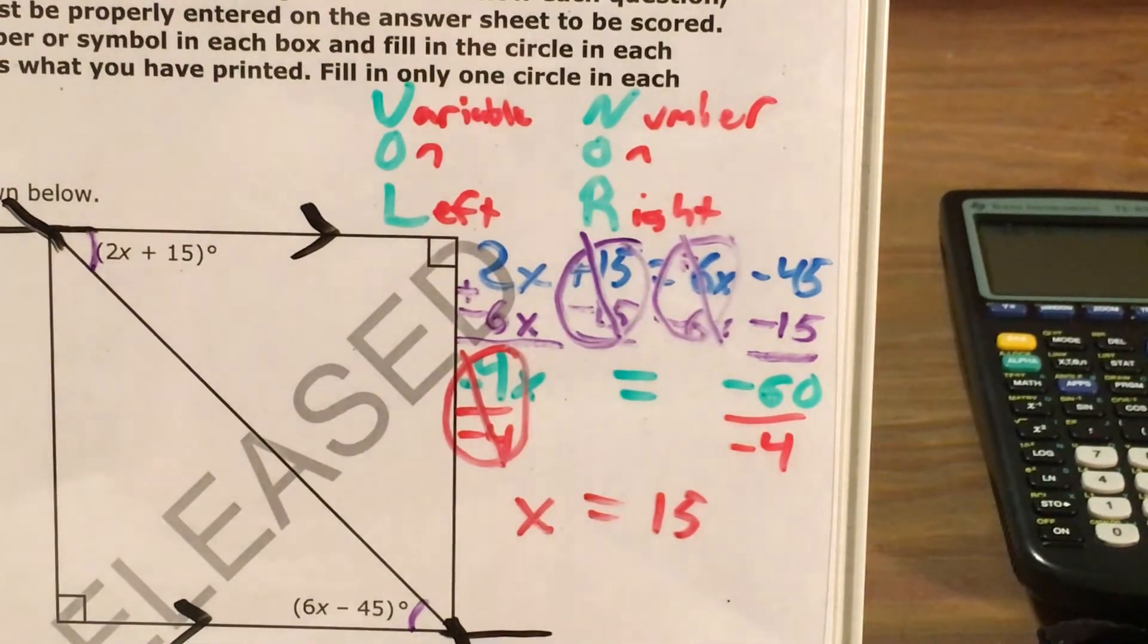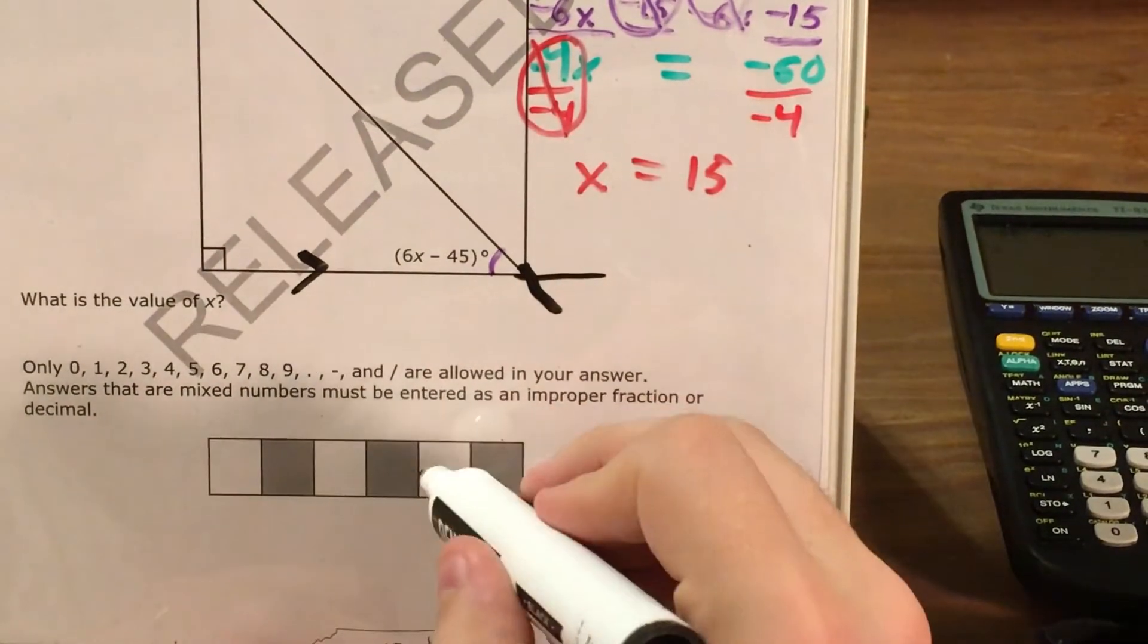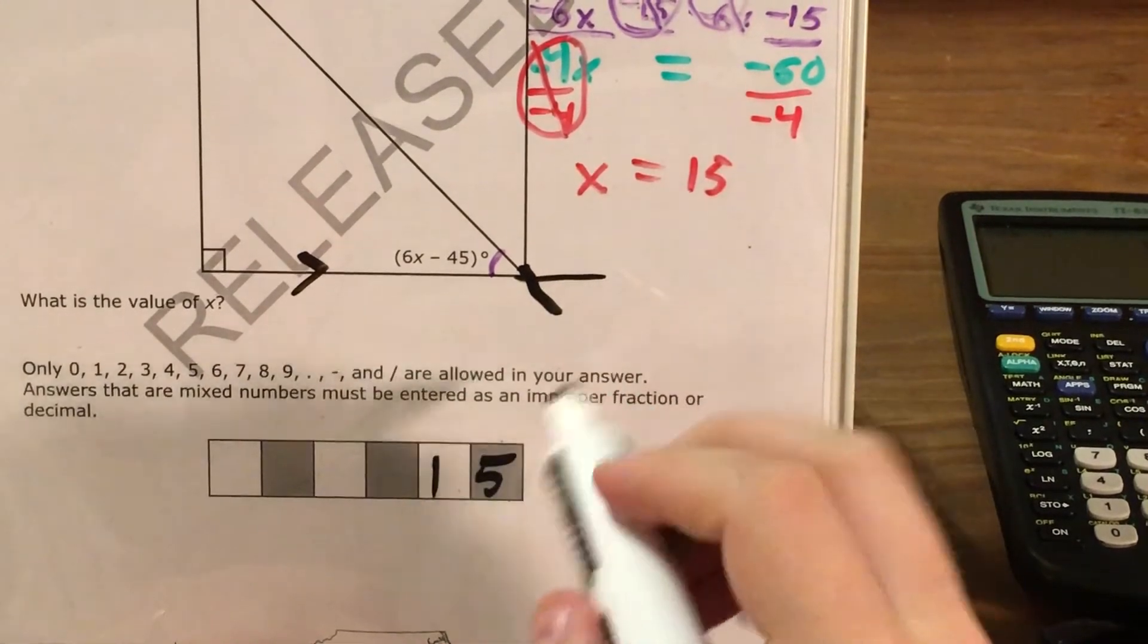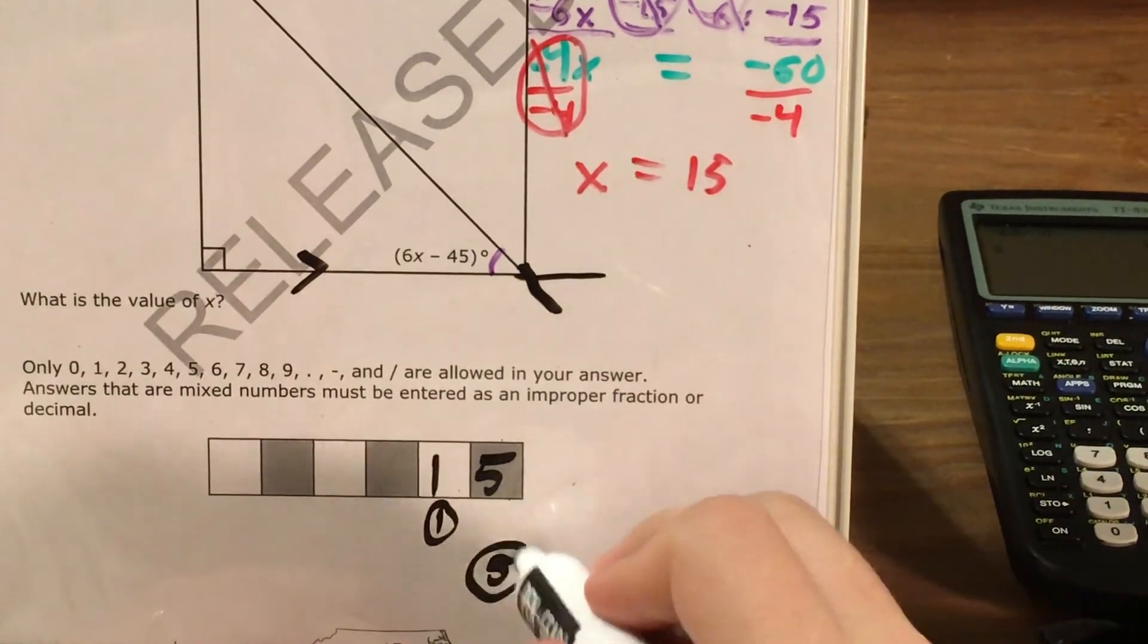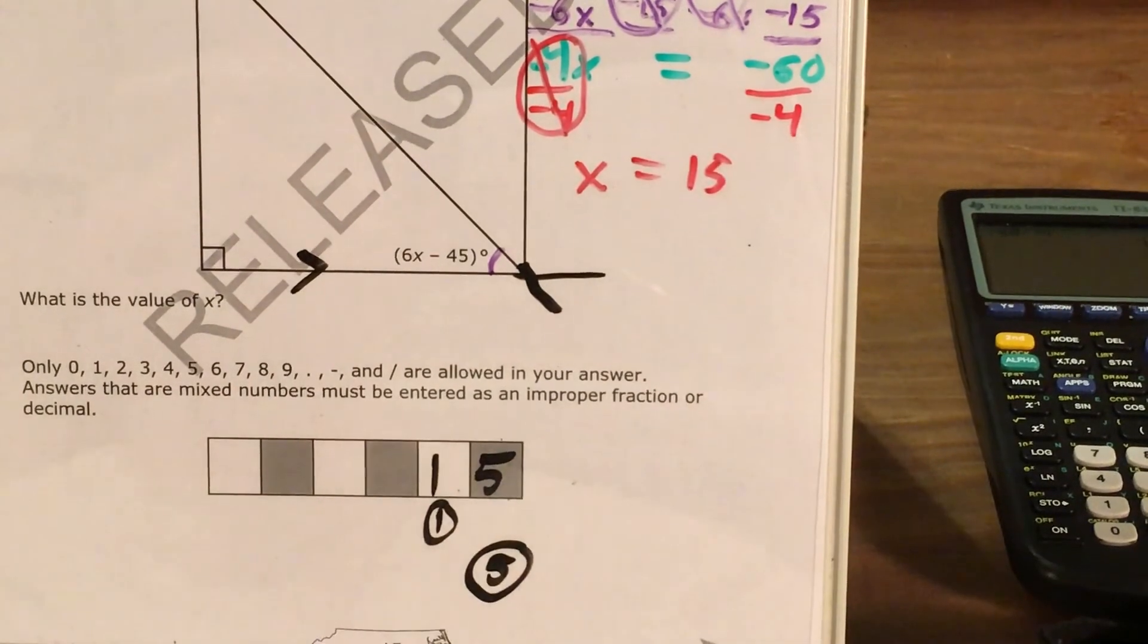So I come down to my gridded response boxes. Every digit in 15 gets its own box. The 1 bubble under the 1 gets filled in. And the 5 bubble under the 5 gets filled in as well.